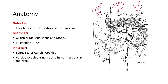The middle ear consists of the malleus, incus, and stapes, which are referred to as ossicles. The term ossicles is given to them because they oscillate in response to sound. Also within the middle ear is the Eustachian tube, which connects the middle ear to the nasal pharynx.